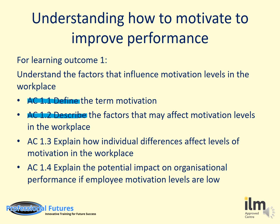AC 1.3 is to explain — explain how individual differences affect levels of motivation in the workplace. This is where you give meaning and reasons why personality differences can affect motivation. AC 1.4 is also to explain — explain the potential impact on organisational performance if employee motivation levels are low. This is where you give meaning and reasons as to why low motivation will affect organisational performance.